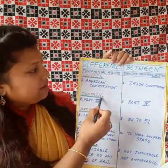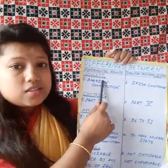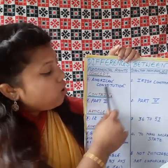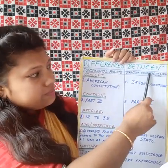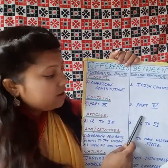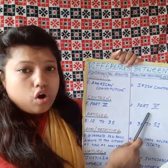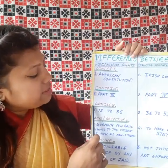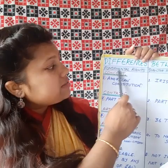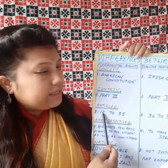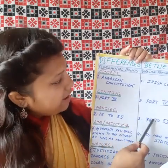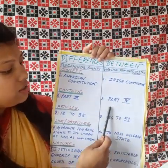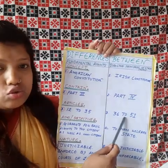Point number two is Content. Fundamental Rights come under Part 3 of the Indian Constitution, whereas Directive Principles of the State Policy come under Part 4. Point number three is Articles. Fundamental Rights come under Article 12 to 35, whereas Directive Principles of the State Policy come under Article 36 to 51.